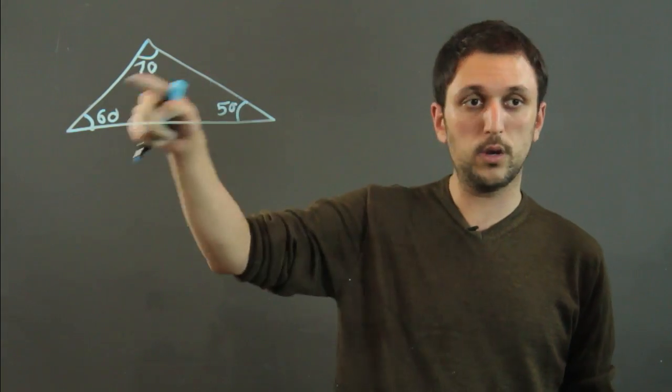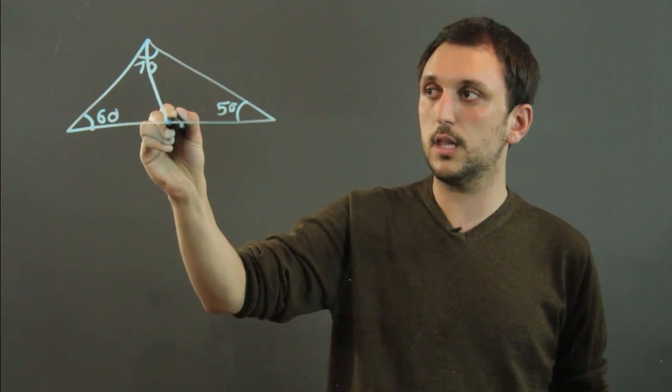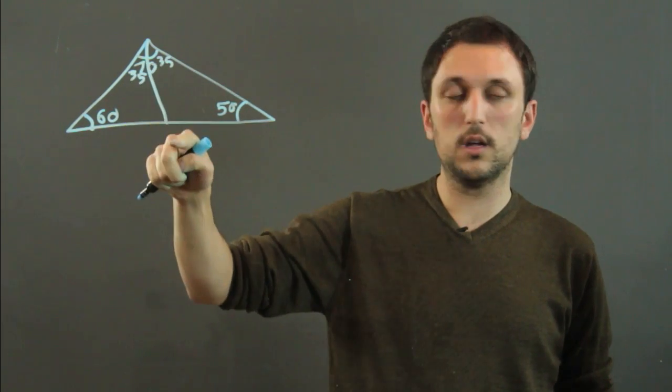To make an angle bisector, we just pick one of the angles, for example 70, and draw a straight line. This would be 35 and this would be 35, like that.